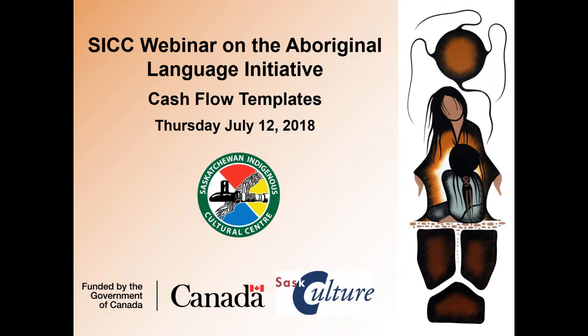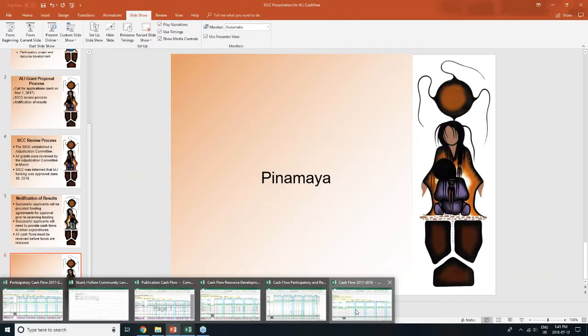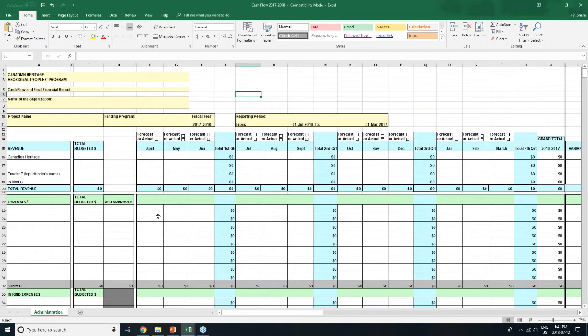This webinar is really designed for people who have been approved for funding for the Aboriginal Language Initiative. During that process, you would have filled in a budget that showed your different costs — whether it be for renting facilities, whether it be for hiring support personnel, educators, or translators. So now what we need for this next step for the approved applicants is to fill out the cash flow. This is really important, necessary paperwork. We'll work through three different examples of typical sorts of projects. Let me call up the Excel spreadsheet that we sent out to folks.